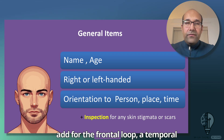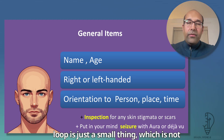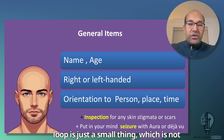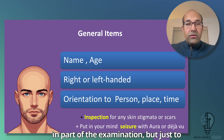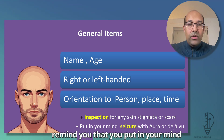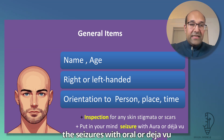For the frontal-temporal lobe, just a small addition to keep in mind: note any seizures with aura or deja vu sensation.